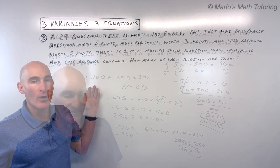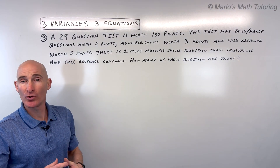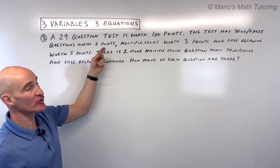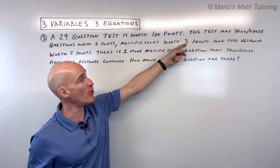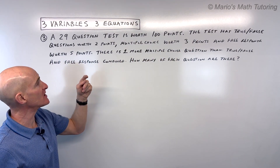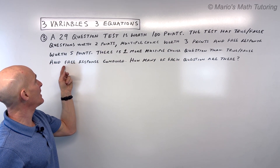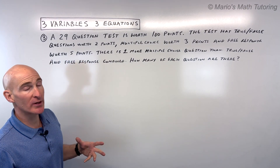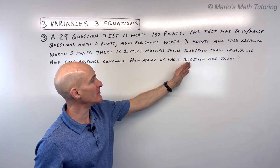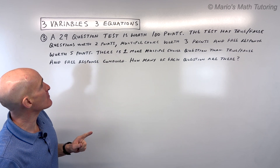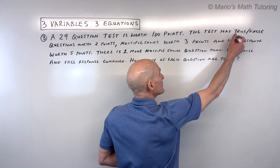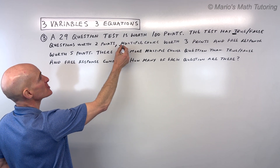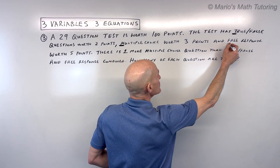For the third example — pause and try it yourself — a 29-question test is worth 100 points. True-false questions are worth 2 points, multiple-choice worth 3 points, and free-response worth 5 points. There is one more multiple-choice question than true-false and free-response questions combined. How many of each question are there? I'll use T for true-false, M for multiple-choice, and F for free-response.